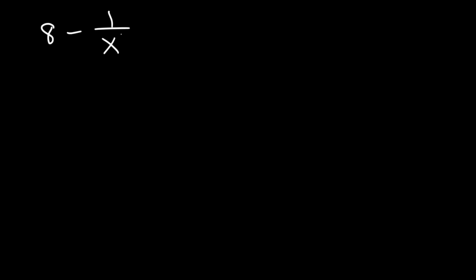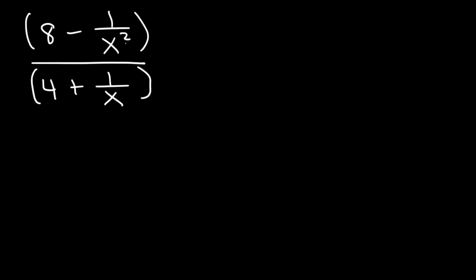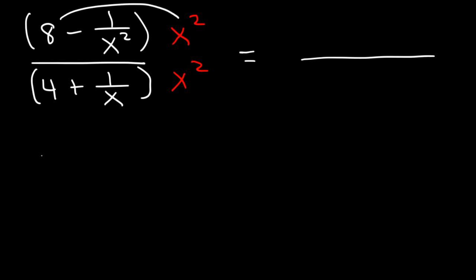Let's try this one: 8 minus 1 over x² divided by 4 plus 1 over x. What should we multiply the top and the bottom of this fraction by? We need to multiply by x². x² will cancel 1 over x² and 1 over x at the same time. So now let's multiply. 8 times x² is 8x², and then 1 over x² times x² — these two will cancel — leaving behind 1.